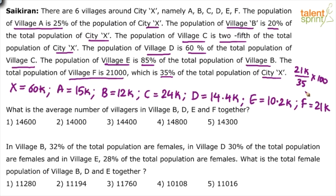First question: what is the average number of villagers in B, D, E, and F together? Average is the sum of all values divided by the number of values. B is 12, D is 14.4, E is 10.2, F is 21. So 12 plus 14.4 is 26.4, plus 10.2 is 36.6, plus 21 gives us 57.8, divided by 4.